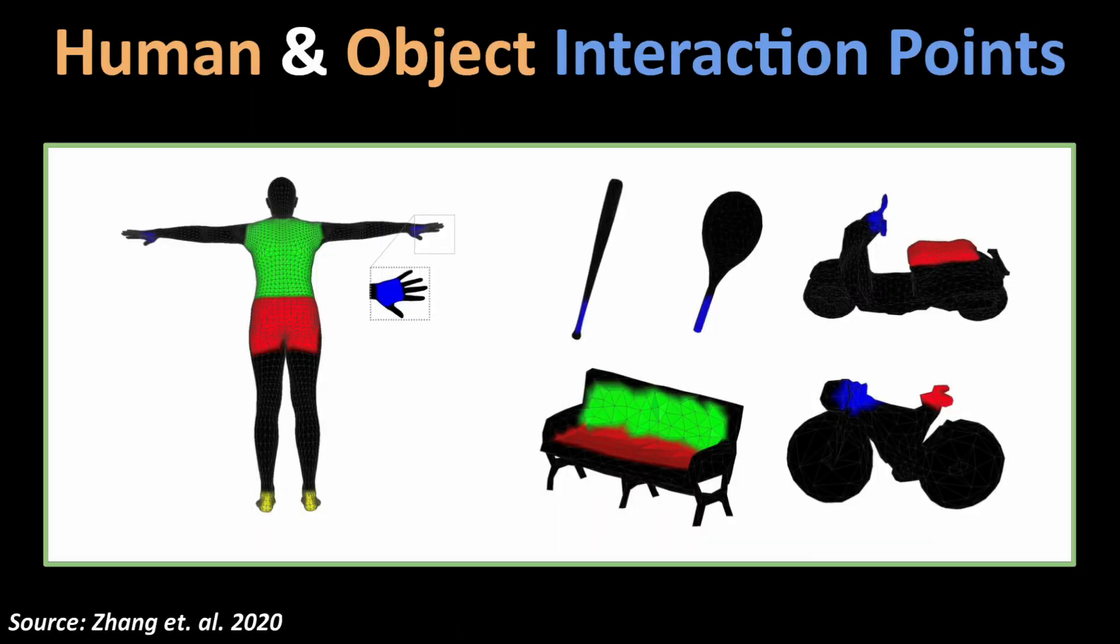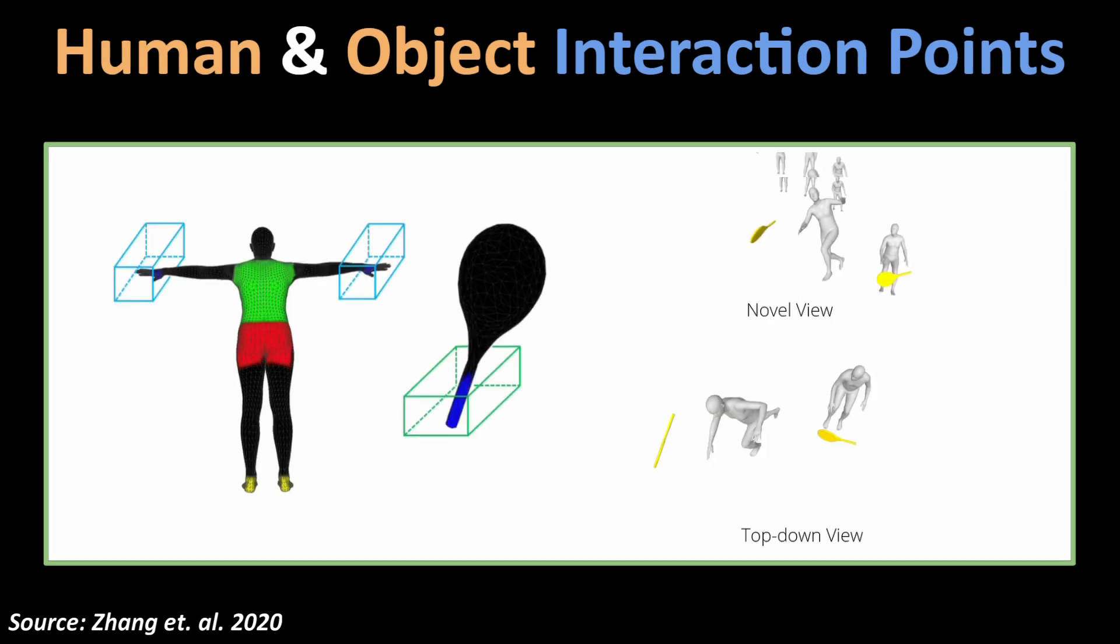It also learns information about the common interaction points on the human body, such as hands and feet, as well as that for the different objects. This ensures human bodies and the objects are not floating in air and are always in contact with each other at appropriate interaction points in the reconstructed 3D scene.